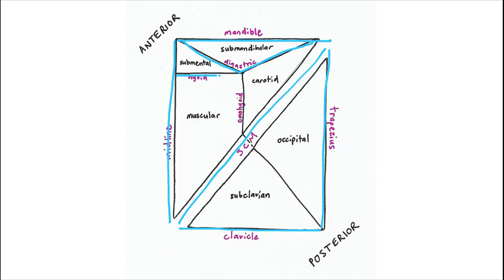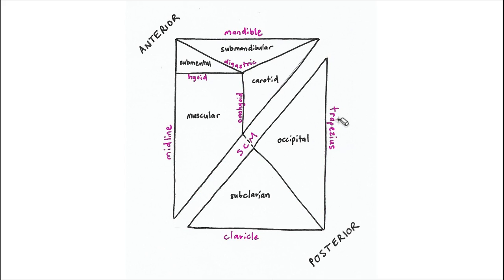We have the hyoid bone cutting across, and then we have the omohyoid, which also has two bellies — the superior one, and then it swings down to make the inferior belly — and all of that together is going to comprise all of the boundaries of all six of those triangles we just went over.